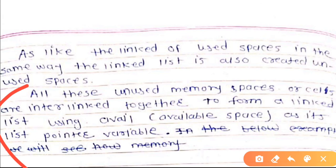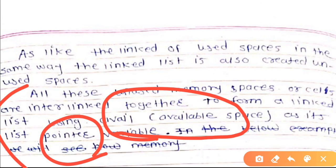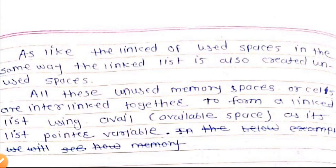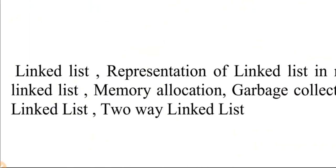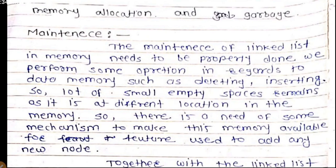To form a linked list using the available pointer, all these unused memory spaces are interlinked together. This is all about memory allocation and garbage collection — the process of collecting and reusing freed memory spaces.